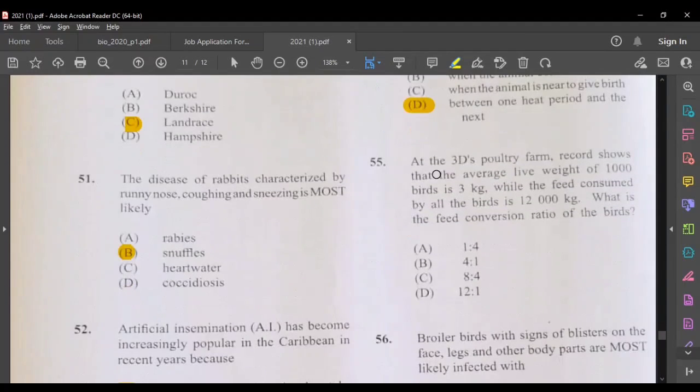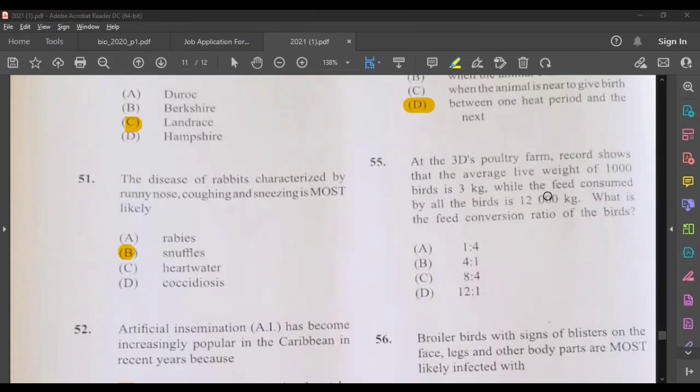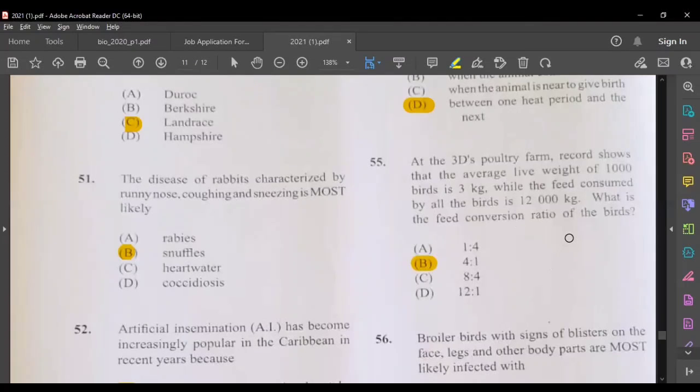Question 55, we have a question here on feed conversion ratio. At 3D's poultry farm record shows that the average live weight of 1,000 birds is 3 kg, so 3 kg times 1,000, that's 3,000. While the feed consumed by all of the birds is 12,000. What is the feed conversion ratio of the birds? You'd have to put 12,000 at the top, the amount of feed consumed divided by the total weight of the bird, that is 3,000. So the answer should be B, 4 to 1.